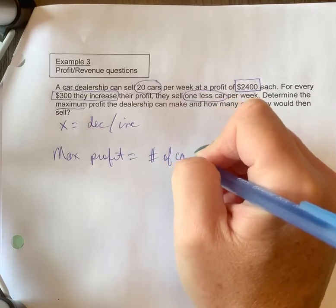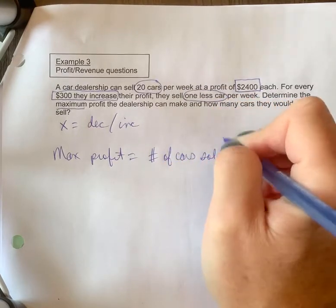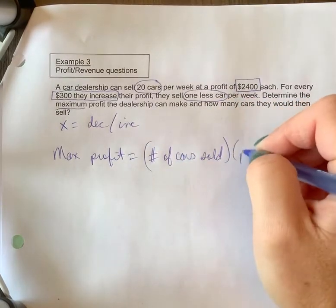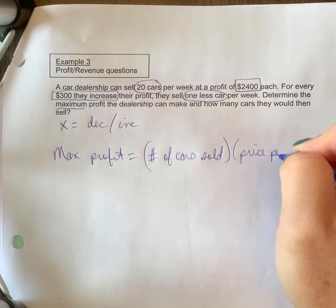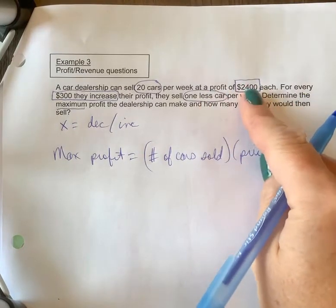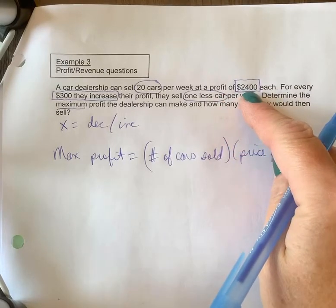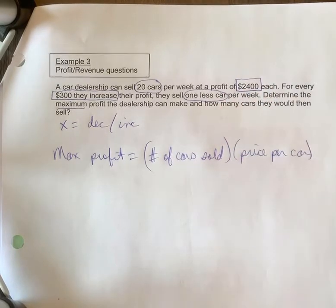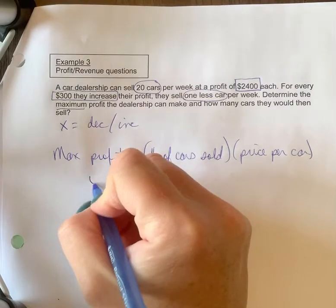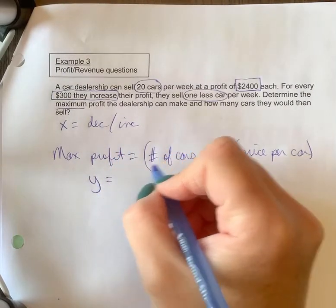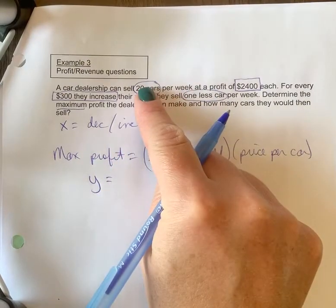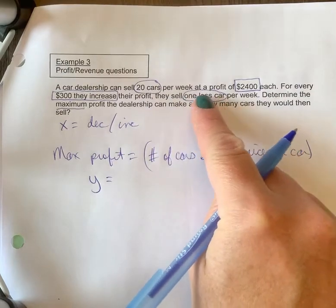And in this case, I wrote price per car—it's really profit per car that they would sell. This is how much money the actual dealership makes on each car. All right, so max profit, we're going to call that our y value. How many cars sold? There's 20, but minus 1x—that's one less.